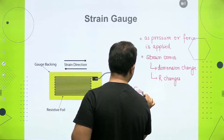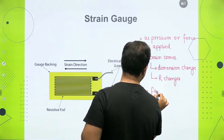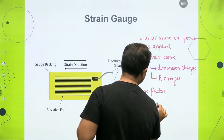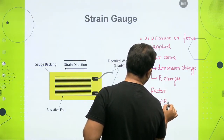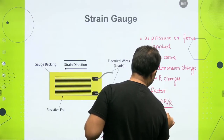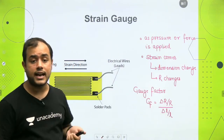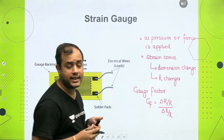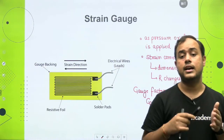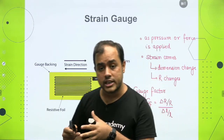We define a quantity called the gauge factor, written as GF. The gauge factor is defined as delta R by R over delta L by L — meaning the change in resistance per unit strain. This resistance change due to strain is what defines a strain gauge, and it is called a piezoresistive transducer, because 'piezo' means pressure — the resistance changes with the help of pressure.